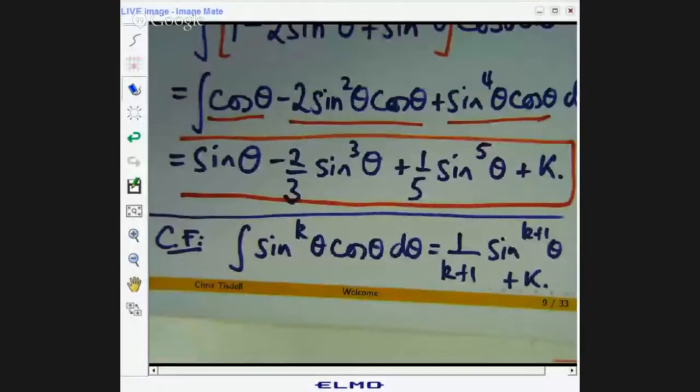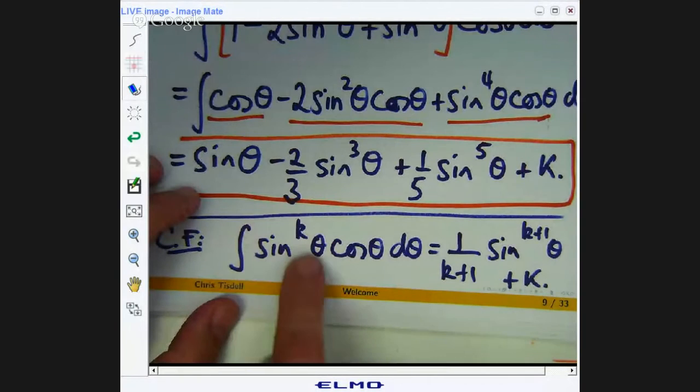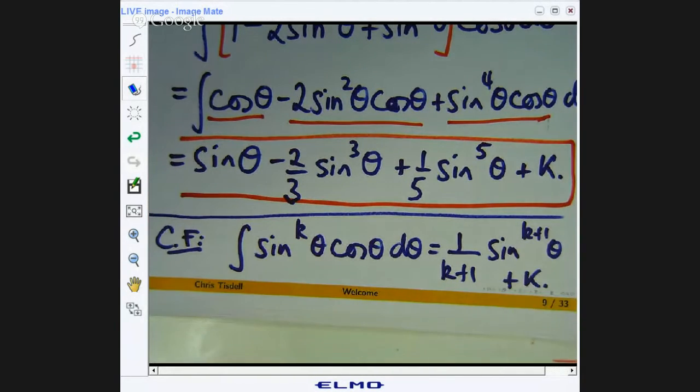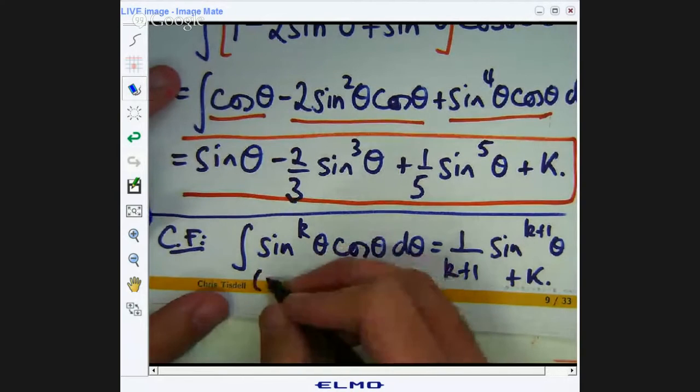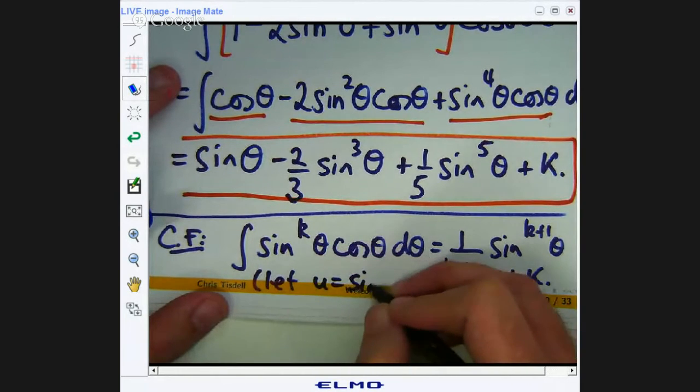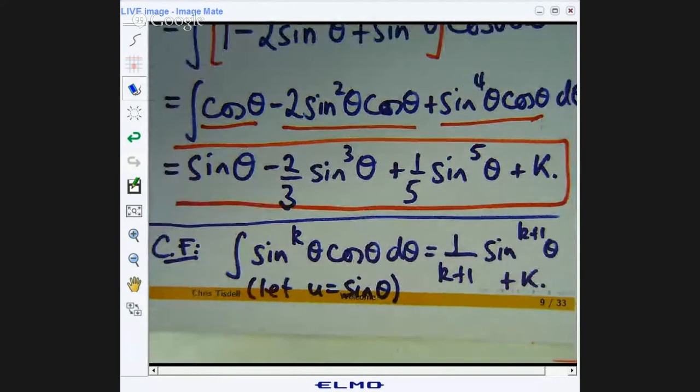You would let, so to get this from this, you would let u equals sine theta substitute in. You'll get the integral of u to the k times du. You integrate that and back substitute and you'll get this. So, to get this, you just let u equal sine theta. I won't do all the details there. I'll let you put in the details.